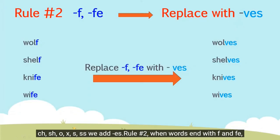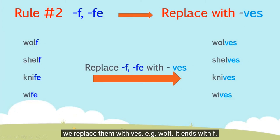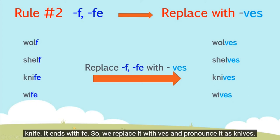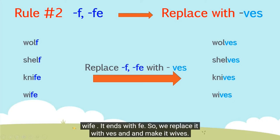Rule number two: when words end with F and FE, we replace them with VES. Example: wolf — it ends with F, so we replace it with VES and pronounce it wolves. Shelf ends with F, so we replace it with VES and pronounce it shelves. Knife ends with FE, so we replace it with VES and pronounce it knives. Wife ends with FE, so we replace it with VES and make it wives.